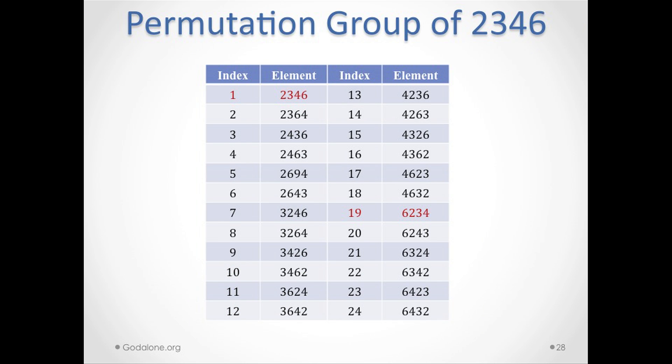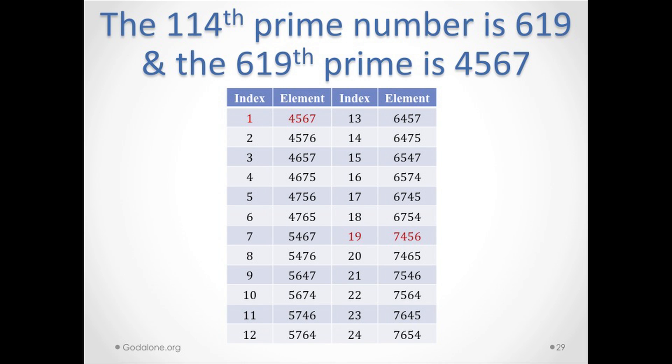There's another permutation group: digits 2, 3, 4, 6. You do it the same way, and the first and 19th permutations are highlighted — 2346 and 6234. Also, the 114th prime number is 619, and the 619th prime is 4567, four consecutive digits. Writing the permutation group for 4567: the first is 4567 and the 19th is 7456.